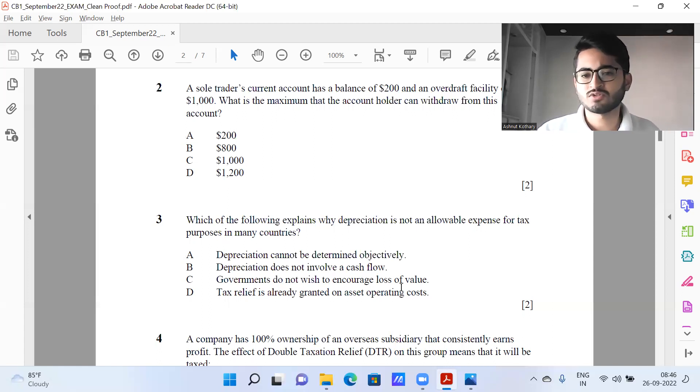Option B - depreciation does not involve a cash flow, which is also true. Remember that depreciation is a non-cash flow expense. It is just to reduce the value of the asset over its useful life. Option C - governments do not wish to encourage loss of value. That is not the case. So clearly C is wrong. When you are doing this in exam, this is how you might be planning to do. Also, given that exams for CB1 and CB2 are going to become OBA format from April 2023, elimination of answers in MCQ also becomes extremely important. Option D - tax relief is already granted on asset operating costs. Again, not ready. So I was confused between A and B.